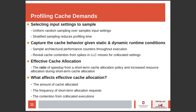Our profiling goal is to record cache behavior given static and dynamic runtime conditions. We accomplish this by sampling 29 architectural performance counters, such as L1 instruction cache stores and L2 cache misses, throughout execution. Profiling reveals cache contention caused by spikes in L2 cache misses for co-located settings. We define a new metric called effective cache allocation that expresses cache contention as the ratio of speedup from a short-term cache allocation policy and increased resource allocation, capturing speedup relative to baseline performance according to the amount of cache allocated, frequency of short-term allocation requests, and cache contention.